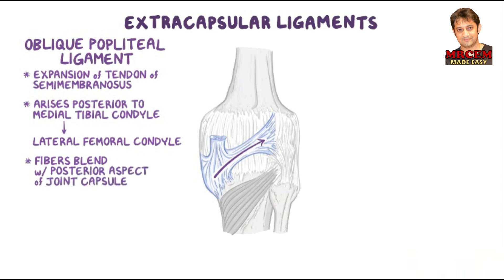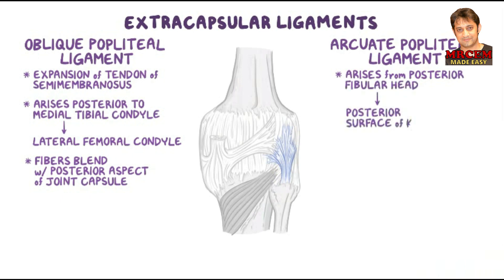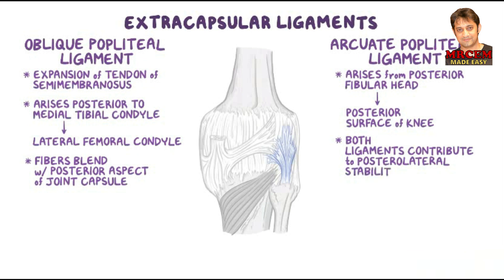The arcuate popliteal ligament strengthens the joint capsule posterolaterally. It arises from the posterior aspect of the fibular head and spreads over the posterior surface of the knee joint. Both the oblique and the arcuate popliteal ligament are thought to contribute to posterolateral stability of the knee.